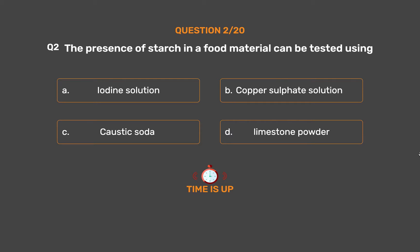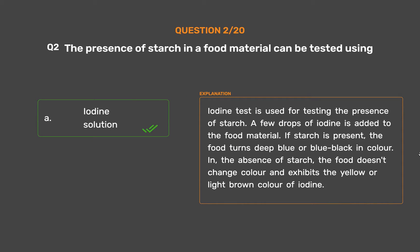The correct answer is Option A - Iodine solution. Iodine test is used for testing the presence of starch. A few drops of iodine is added to the food material. If starch is present, the food turns deep blue or blue-black in color. In the absence of starch, the food doesn't change color and exhibits the yellow or light brown color of iodine.